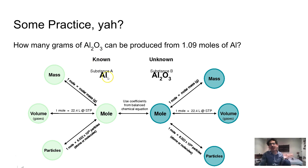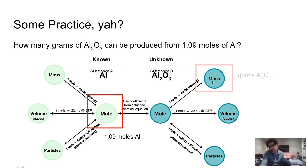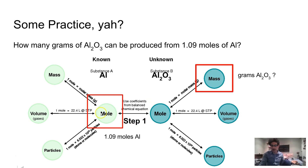Now I can figure out where I'm starting with my known. I've got moles of aluminum, so I'm going to be starting with moles of aluminum — I'm going to start right here. And I want to get to grams of aluminum oxide, so I'm going to get to mass. I'm going from here to here, and I'm going to do that in two steps. Step one, I'll go from moles to moles. Step two, I'll go up here following this arrow.